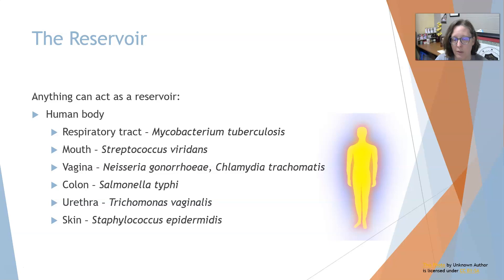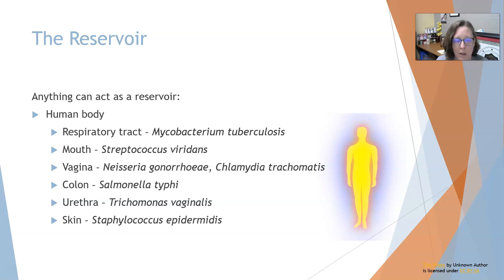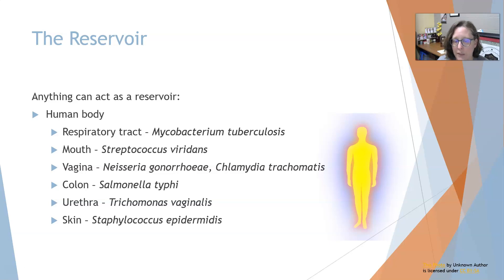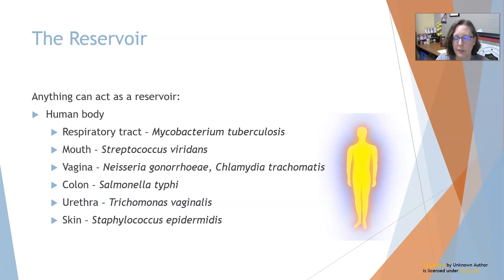Both gonorrhea and chlamydia can be what we call silent infections — the person has it and has no idea, and if they have unprotected sex with another person, they can transmit the infection. The colon can harbor Salmonella typhi. The urethra can harbor Trichomonas vaginalis, another sexually transmitted infection that can also be silent in some patients. The skin can harbor Staphylococcus epidermidis, which is normally completely harmless, but if it gets pushed into the body or bloodstream, it can cause problems.